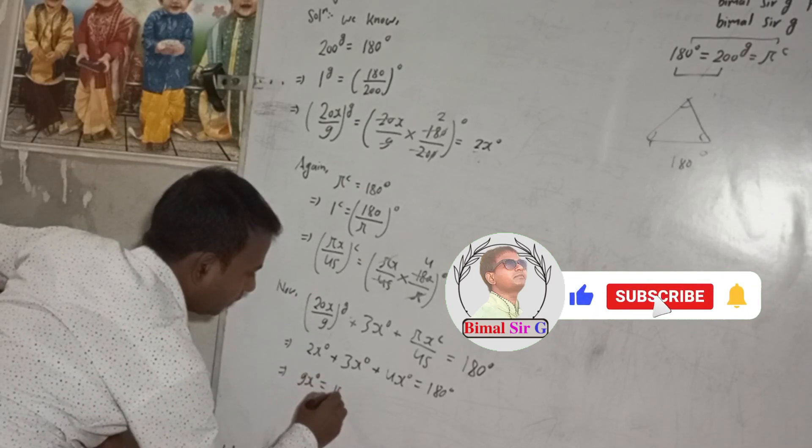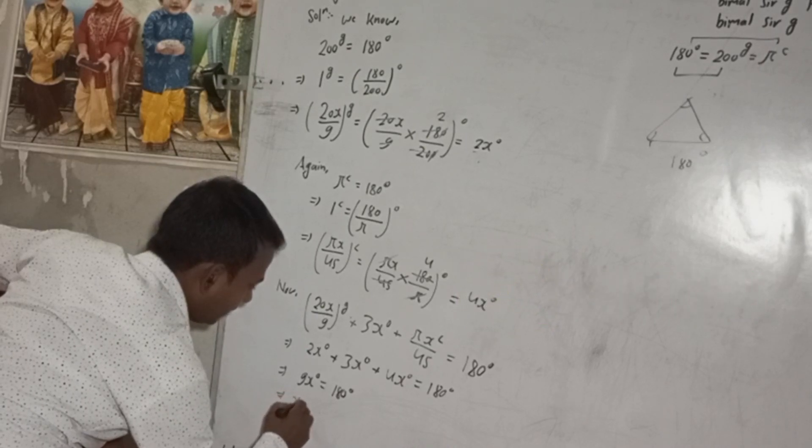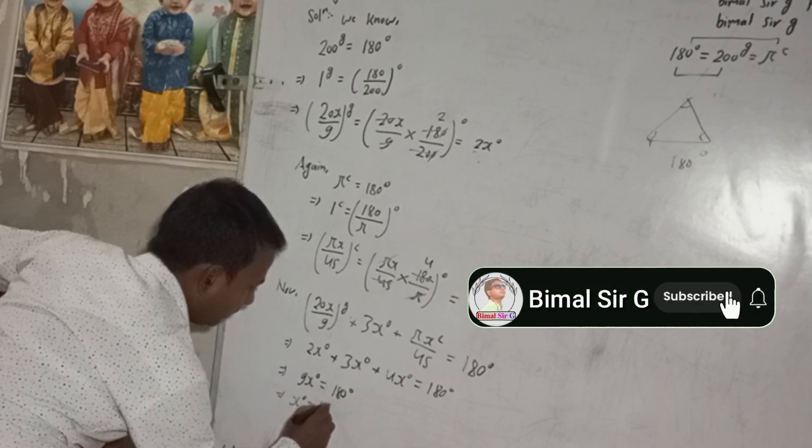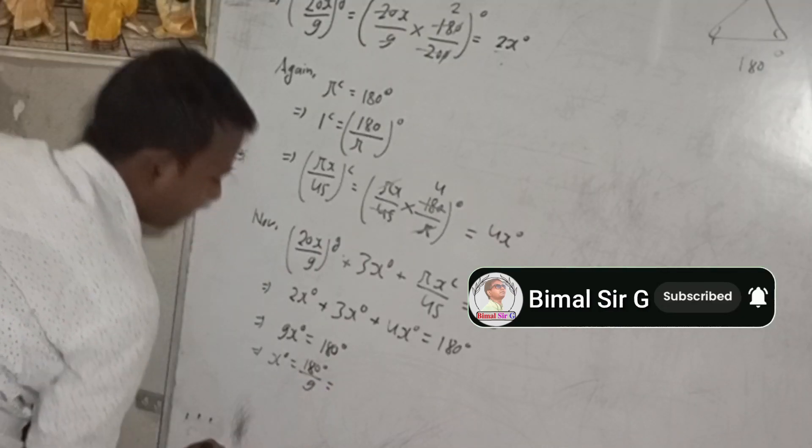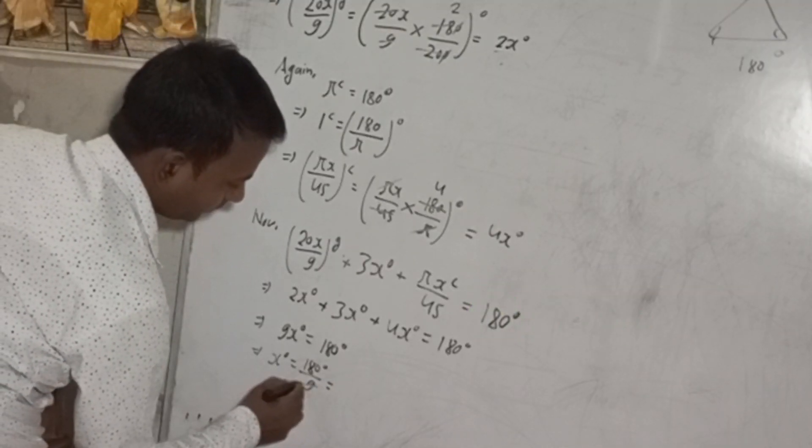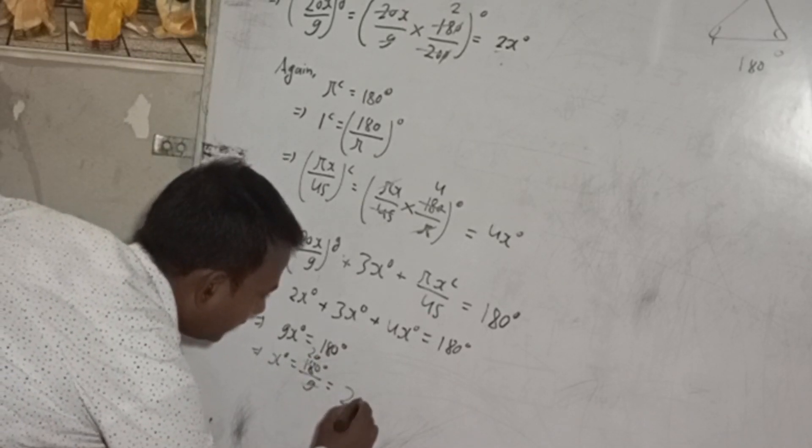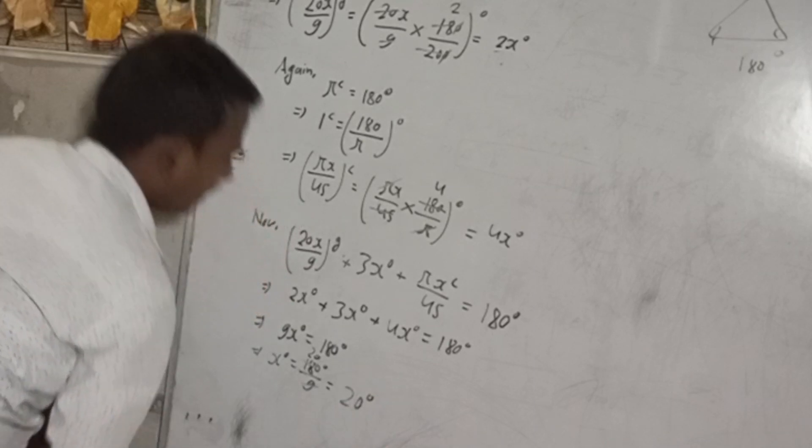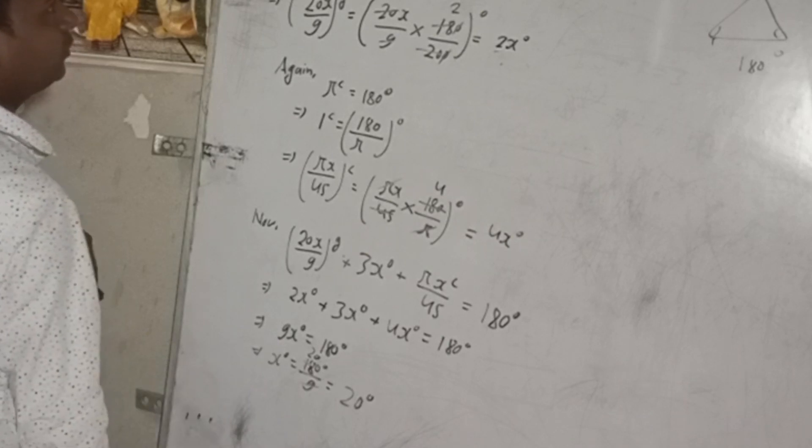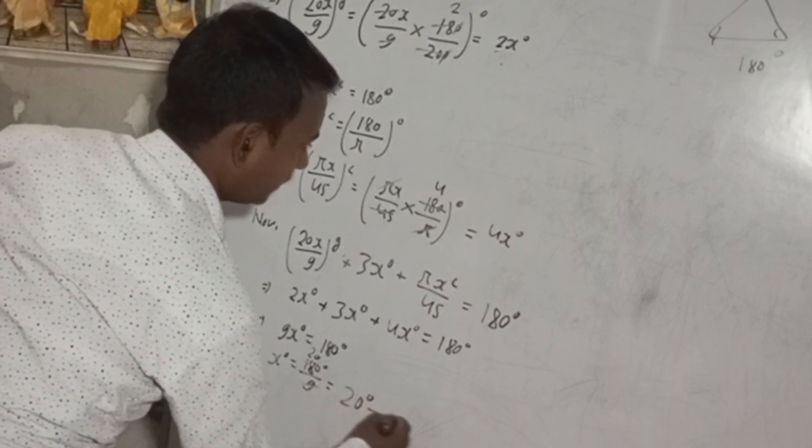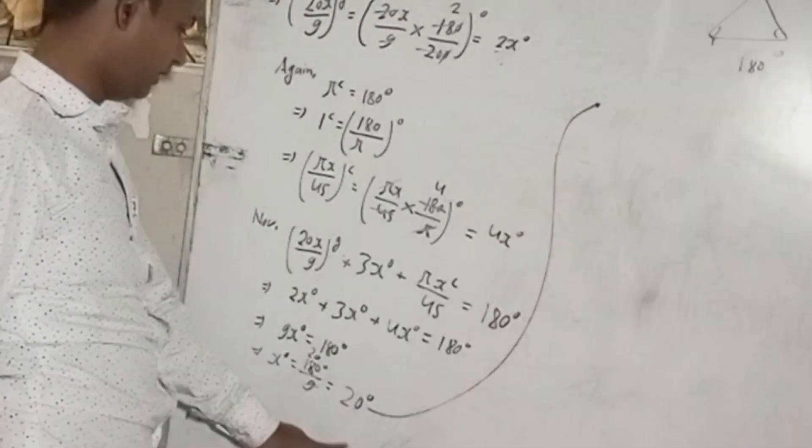This implies x degree is equal to 180 by 9 degree, is equal to, 9 into 18 and this 0, so this will be 20 degree. So we got x is equal to 20 degree.